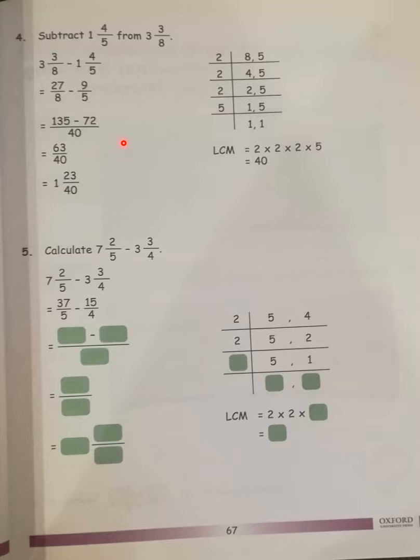Look at page number 67. Here we have mixed fractions: 1 4/5 and 3 3/8. This is called proper fraction with whole numbers. We will convert it to improper in the same way as I told you before. 3 times 8 is 24, we add 3, we get 27. The denominator will remain the same. 5 times 1 is 5 plus 4 equals 9/5. Now we have 27/8 and 9/5.